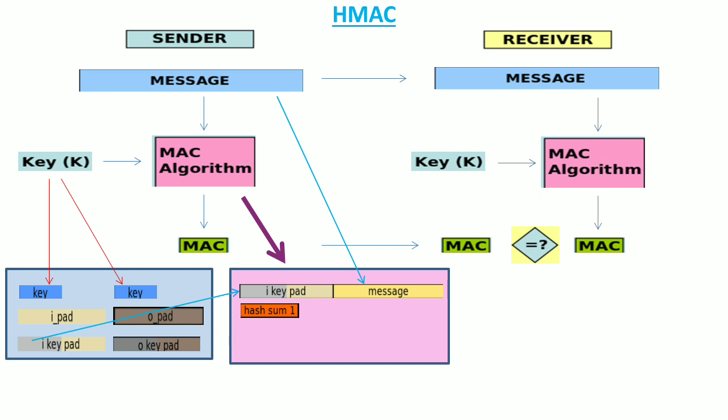This is the major difference between MAC and HMAC: in MAC we hash the message and then the hash is used with the key, whereas in HMAC we do not hash the message directly — rather we concatenate it with the first sub-key and then carry out a hash of the entire product. This first hash is then used with the second sub-key to generate a second hash.